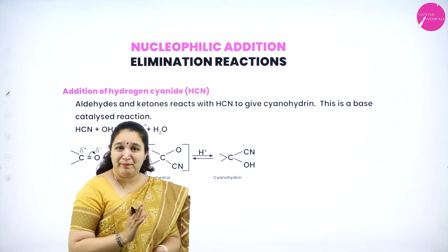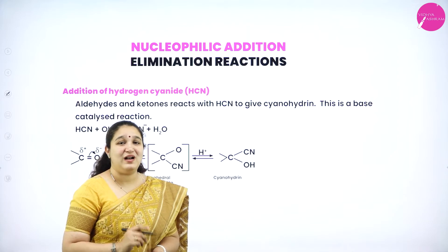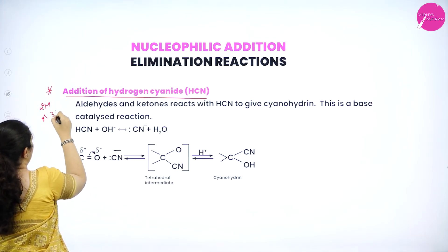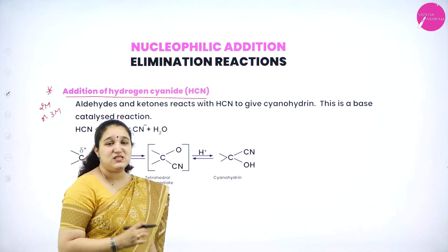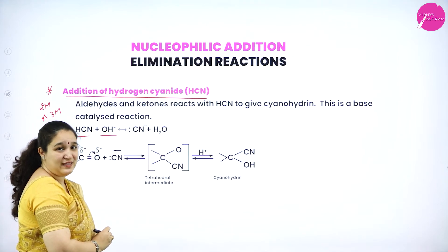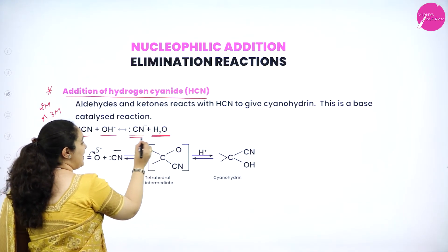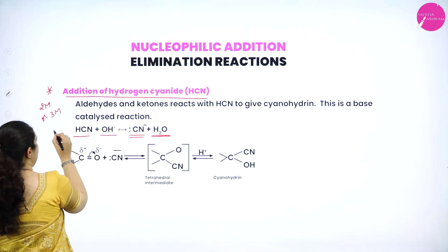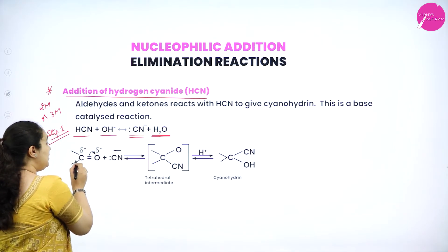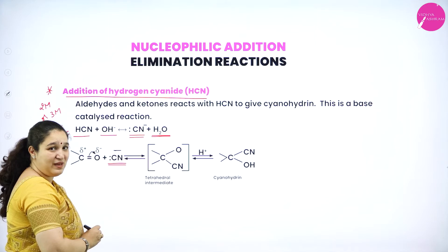Next we learn the mechanism for addition of hydrogen cyanide to aldehydes and ketones — a very important question for two or three marks. This reaction happens in the presence of a base as catalyst. In step one, HCN in the presence of a base: the OH⁻ ion takes the H+ from HCN, forming H2O, and the cyanide ion (CN⁻) is generated. You get the cyanide ion as the nucleophile.